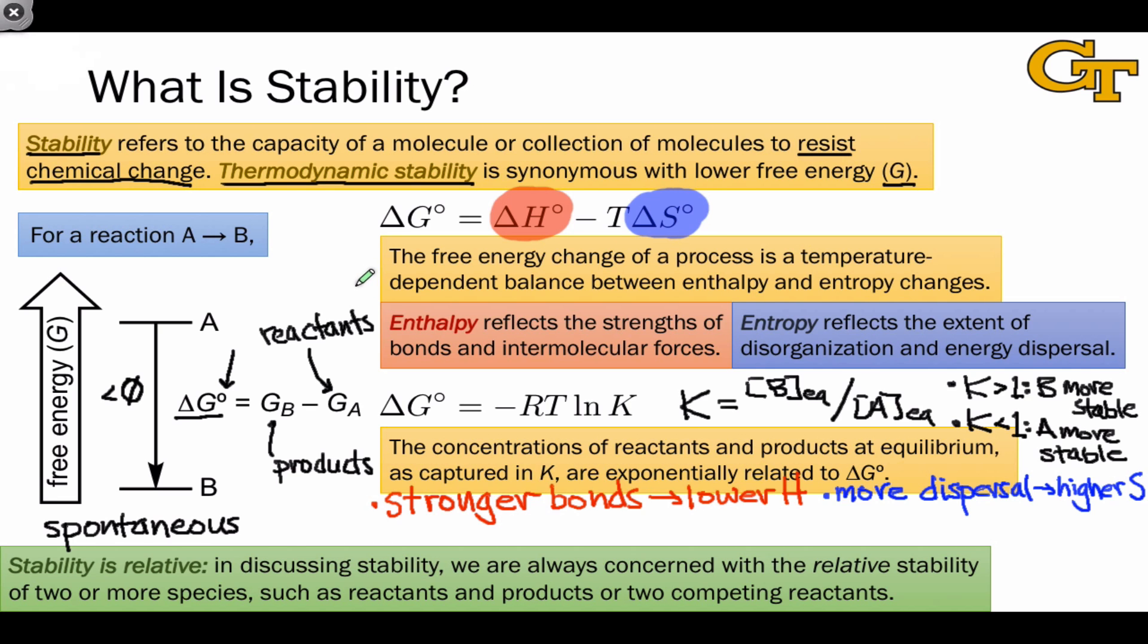One important point that we can appreciate now is that stability is relative. It's all about delta G, changes in free energy in going from one state to another. Because all we're interested in really is changes from one state to another, we think of stability in relative terms. What is the relative stability of our initial and final state?